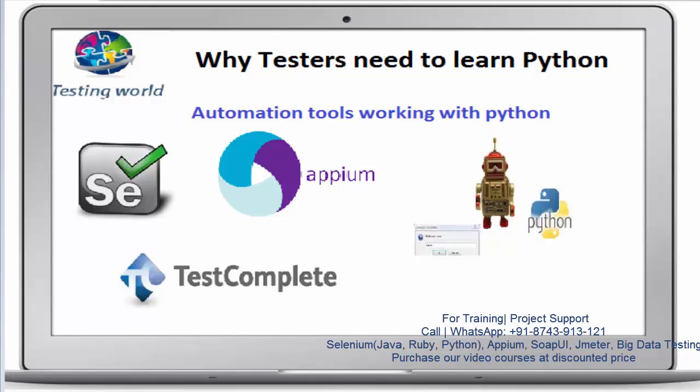When going for any automation tool, we need to learn a programming language. If you are working on UFT — previously called QTP — the language is VBScript. Today, several popular tools support Python. For example, Selenium supports Python. Similarly, for mobile application automation, one of the most popular tools is Appium, which also provides support for the Python programming language.